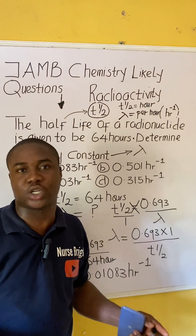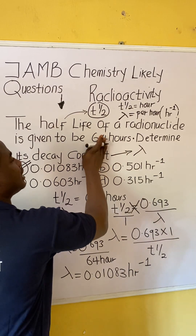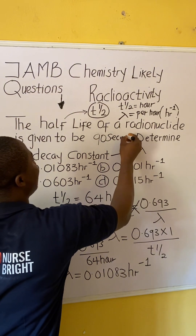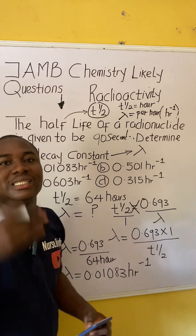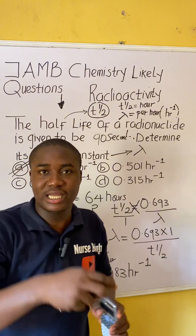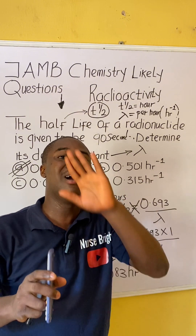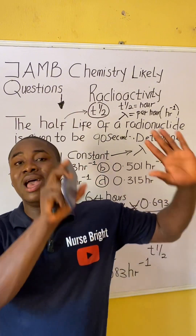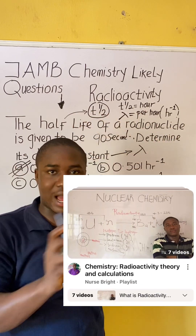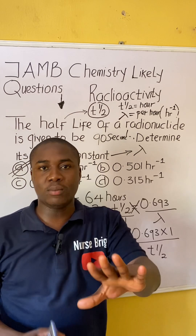You can see how easy this question is. Now get ready for a practice question — I'm going to change the parameters. Instead of 64 hours, let's say the half-life is 90 seconds, and the question still asks you to determine the decay constant. Use the same approach and solve it. I'll provide the answer in the comment section. Also, I already have a full video lesson on my channel covering everything about radioactivity — the videos are arranged in a playlist, so go watch that full lesson to understand radioactivity from scratch.